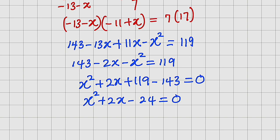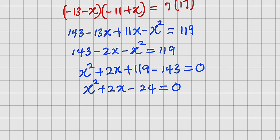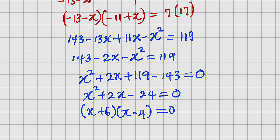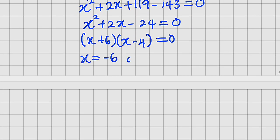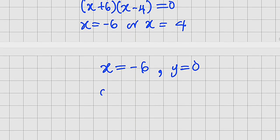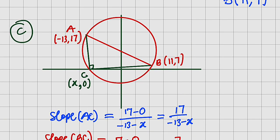This quadratic can be factorized. We need two numbers that multiply to give negative 24 and add to give positive 2. Those numbers are 6 and negative 4. So we have (x plus 6)(x minus 4) equals 0, which gives either x equals negative 6 or x equals positive 4. But since C lies on the negative x-axis, we take x equals negative 6. The y-coordinate is 0, so the coordinates of C are negative 6, 0.